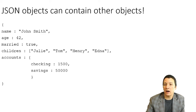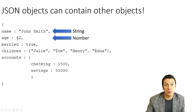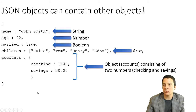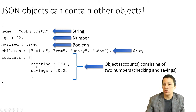Here is a sample JSON object describing a customer. It has a 'name' attribute which is a string — wrapped in quotation marks. It has 'age' which is a number — no quotation marks. It has 'married' which is a boolean — true or false. It has 'children' which is an array of strings wrapped in square brackets. And it has 'accounts' which is an object made up of two attributes: 'checking' and 'savings', which both appear to be numbers.